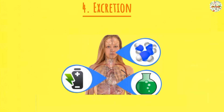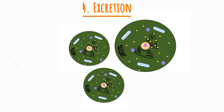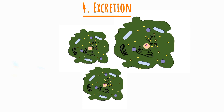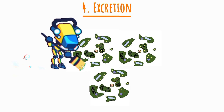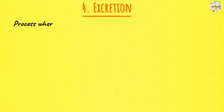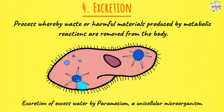Moving on to the next characteristic: excretion. So some of the processes that take place in organisms lead to the formation of waste products. These processes are termed as metabolic reactions — simply chemical reactions that take place in an organism. A lot of these reactions lead to the formation of waste products that are toxic and poisonous to the cells. So excretion is the process whereby waste or harmful materials from metabolic reactions are removed from the bodies of living organisms. It's important because without excretion, the waste products would become toxic, leading to the death of cells.